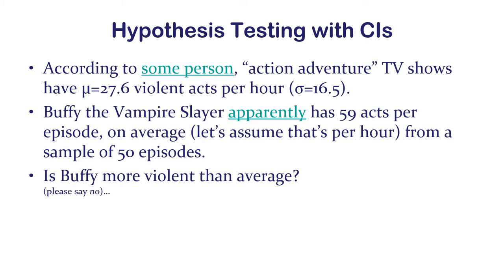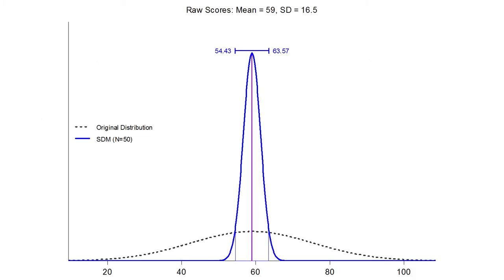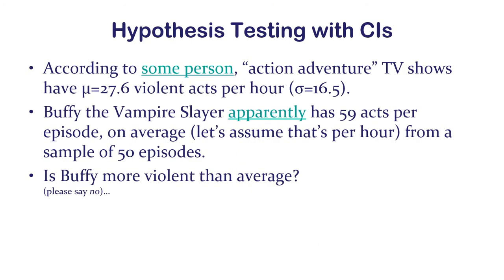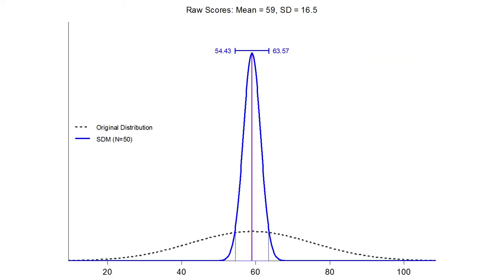Here's the sampling distribution and the confidence interval. The sample mean is 59. Using the population standard deviation of 16.5, we can calculate a confidence interval of 54.43 to 63.57 acts per hour for all Buffy episodes, based on a sample of 50 of the many seasons.